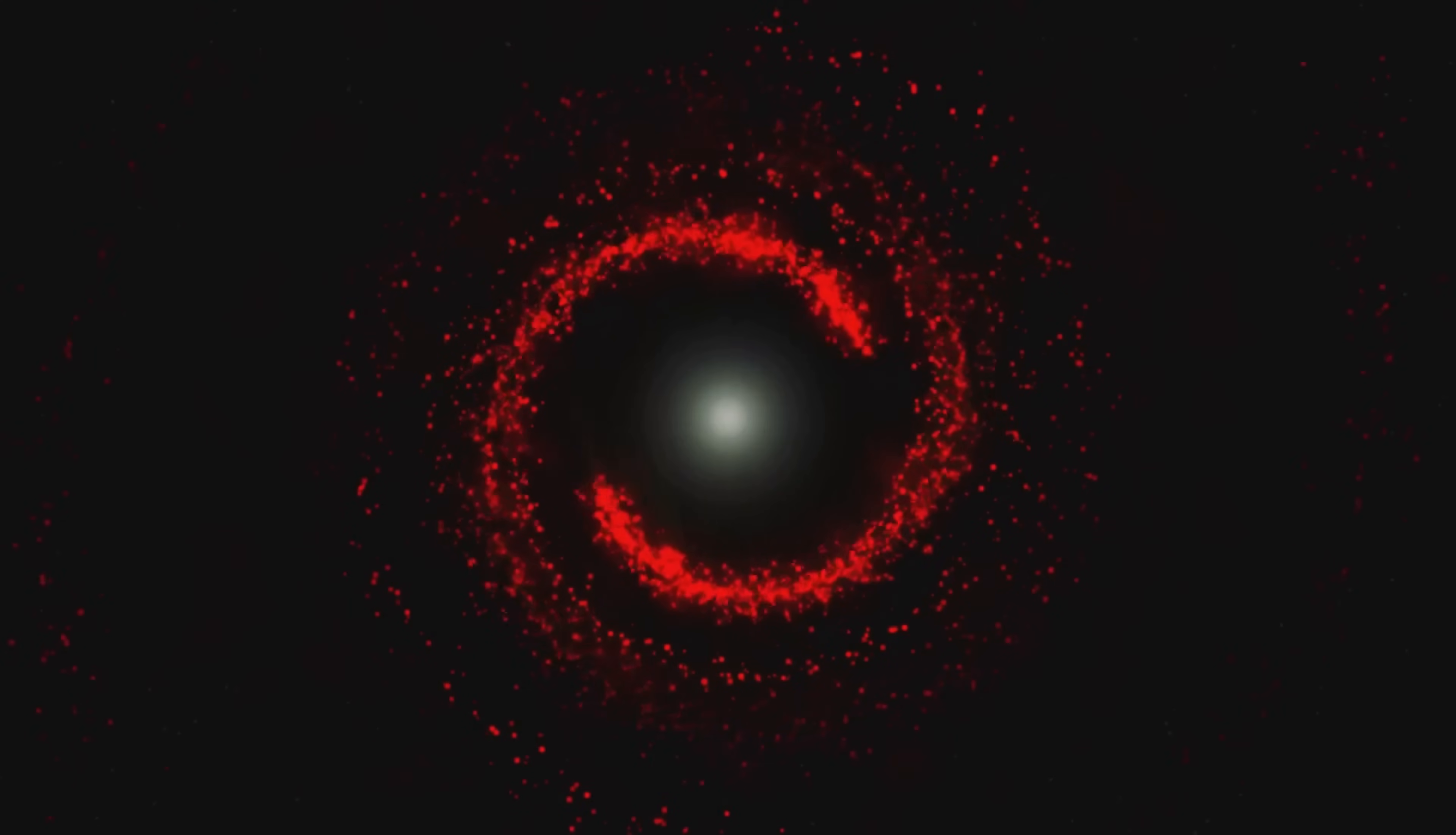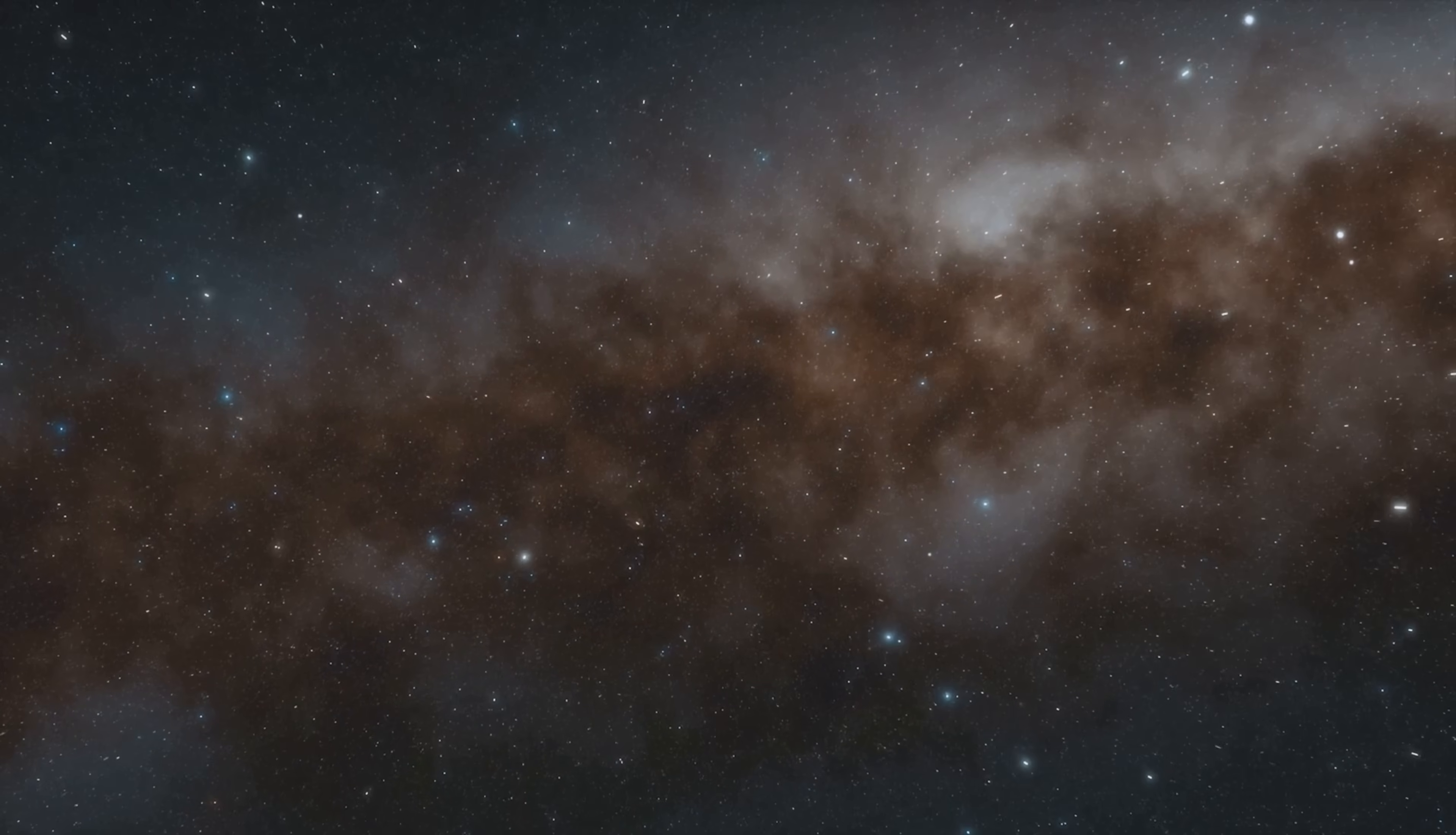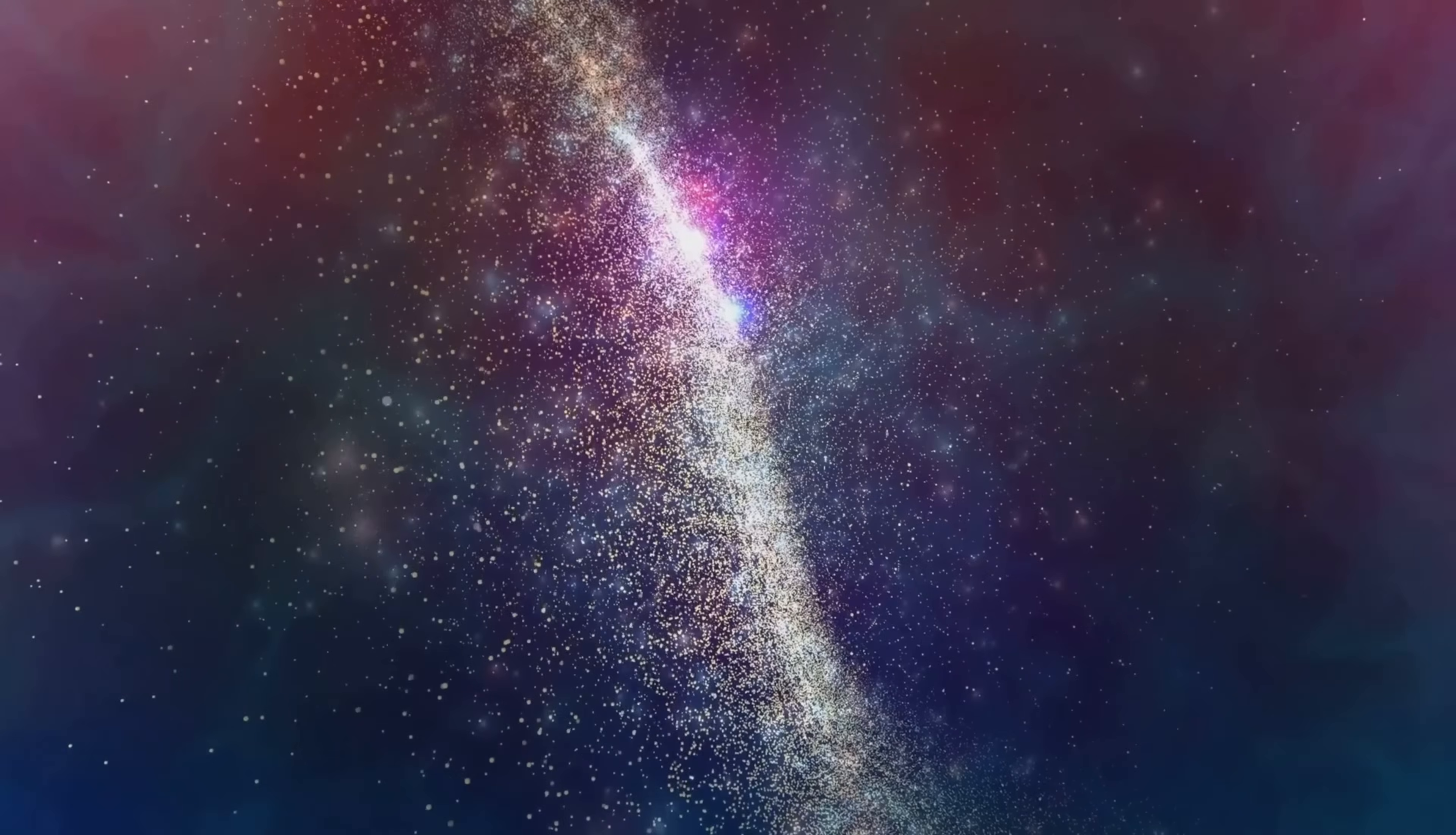Elliptical galaxies are the oldest and largest galaxies in the universe. They have a smooth oval shape and contain mostly old stars. Elliptical galaxies have very little gas and dust, so new stars are not forming in them. Some elliptical galaxies are giant, containing trillions of stars. Others are dwarf elliptical galaxies, which are much smaller. Elliptical galaxies are often found in clusters of galaxies, held together by gravity.